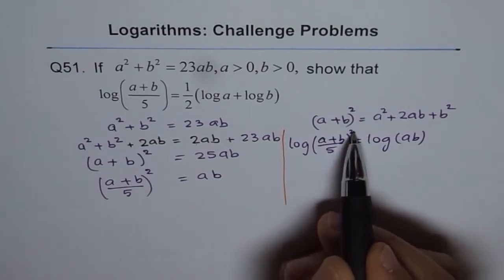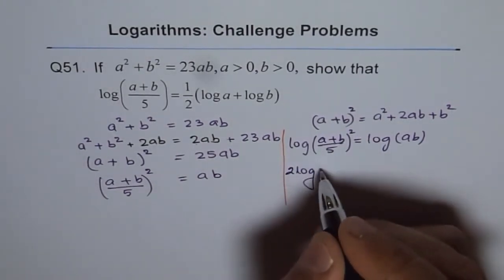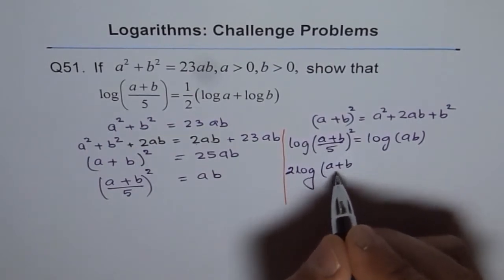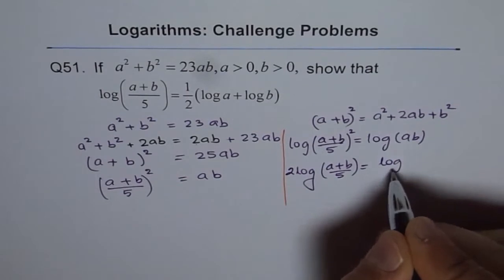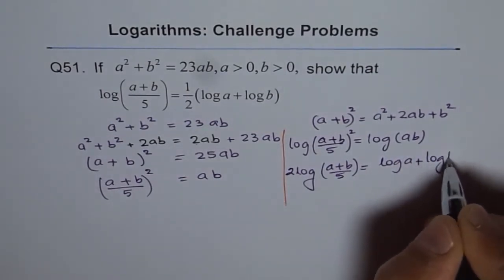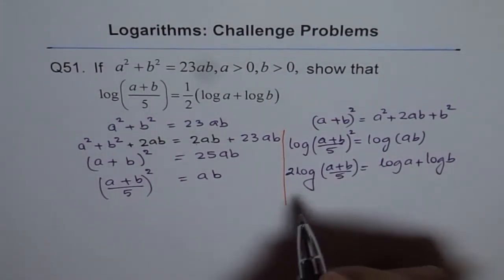This is 2 times log of a plus b over 5 equals log a plus log b. That's the product rule, and this is the power rule.